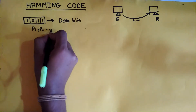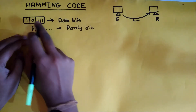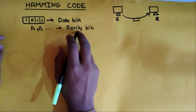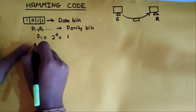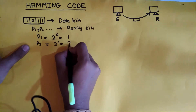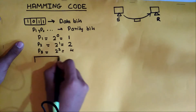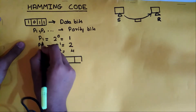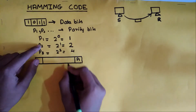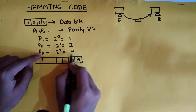The Hamming code uses additional bits known as parity bits. The parity bit is used to detect an error, and is always placed with respect to the data bits. The position of the parity bit is calculated with respect to powers of 2. The first parity bit P1 takes position 2 raised to 0, which is position 1. The second parity bit P2 takes 2 raised to 1, which is position 2. The third parity bit P4 takes 2 raised to 2, which is position 4.